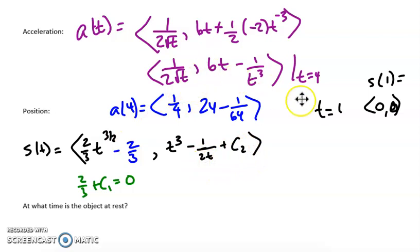For my c₂, I'm going to plug in t equals 1 into my position equation for the y side, and that's going to give me 1 - 1/2 plus c₂ equals 0, again, because the initial point is at the origin. So this gives me 1/2 plus c₂ equals 0, which tells me that my c value is going to be a -1/2. So I'm going to place that in here.